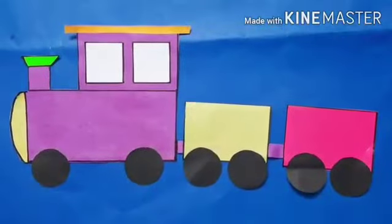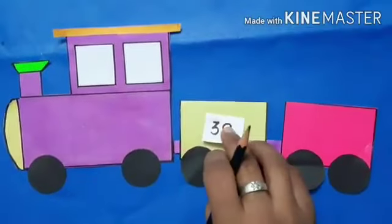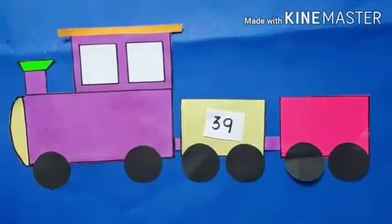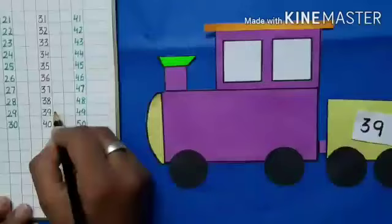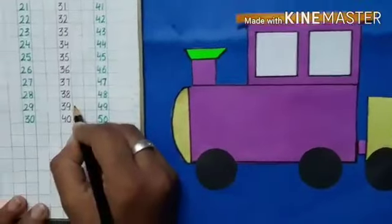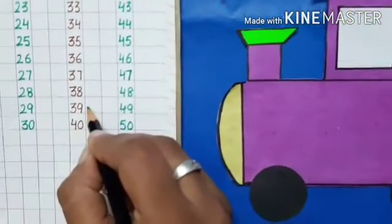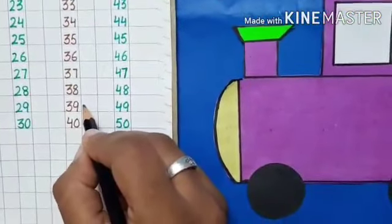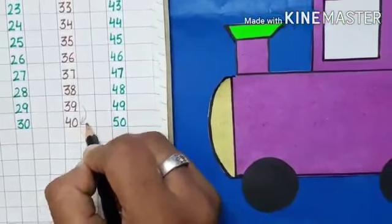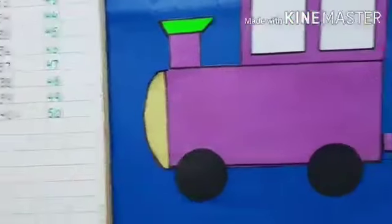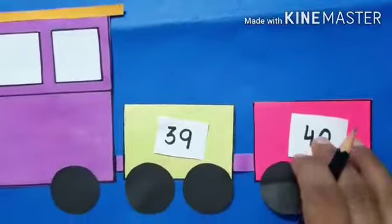Let's take another number: 39. What comes after 39? Yes, students, you all tell me. Very good — that is 40. Now, here we write 40.